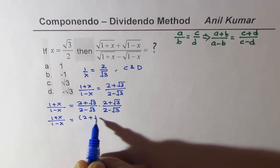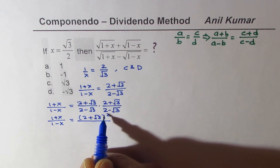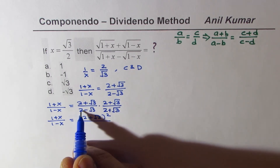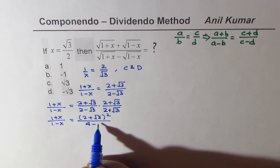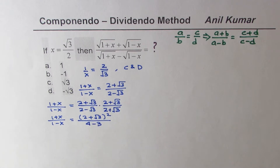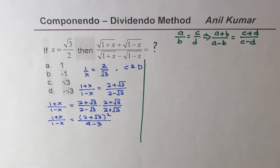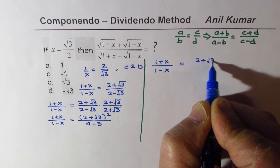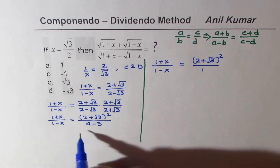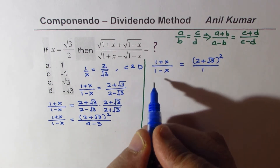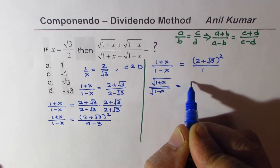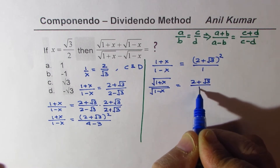We could rationalize this. Multiplying by (2 plus square root 3) to rationalize the denominator gives us: (1 plus x) over (1 minus x) equals (2 plus square root 3) squared in the numerator, and the denominator is a difference of squares — 2 squared minus (square root 3) squared, which is 4 minus 3, equaling 1. Taking square root of both sides: square root of (1 plus x) over square root of (1 minus x) equals (2 plus square root 3) over 1.